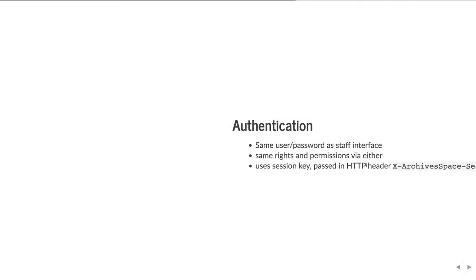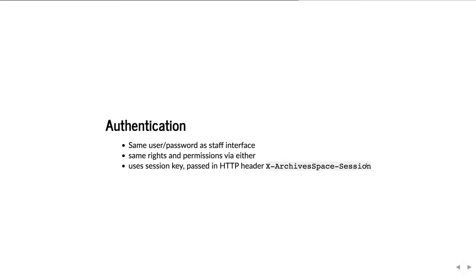Programming against the ASpace API — when we're talking about working with the API, we're primarily talking about working with it from a programming language. The community has congealed around Python, and that's what I'll be using for my examples. Specifically, I'll demonstrate authentication with requests and most things with ArchivesSnake, which is built on top of requests. Any programming language with an HTTP client library is equally capable of doing this, but Python is a good choice because a lot of people are doing that work in Python. Other languages I've seen work done in include Ruby and JavaScript.